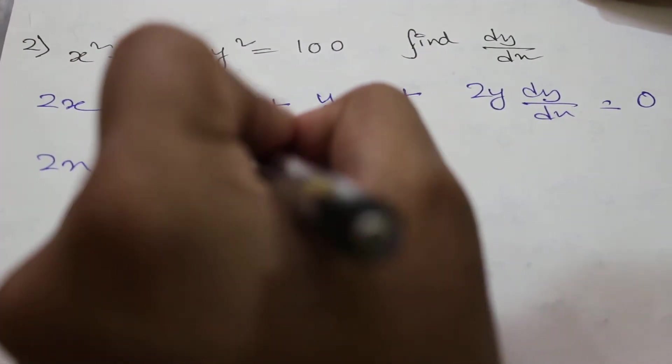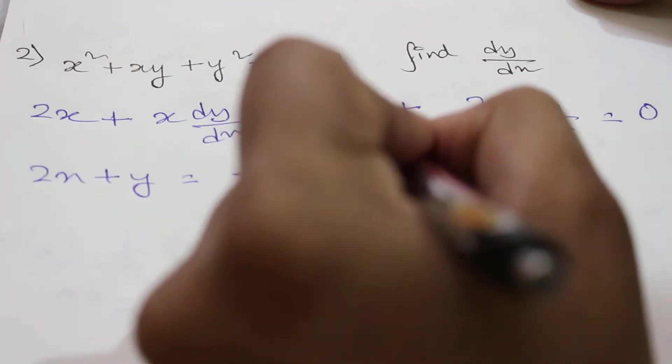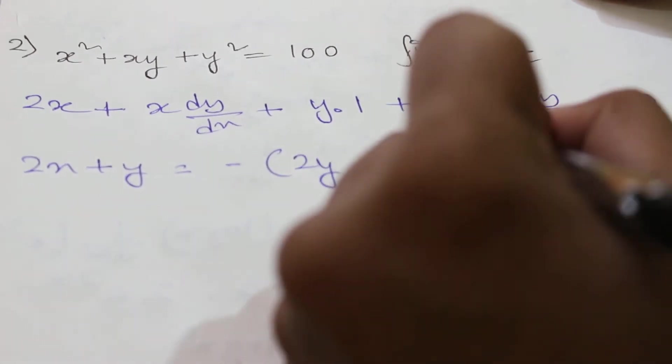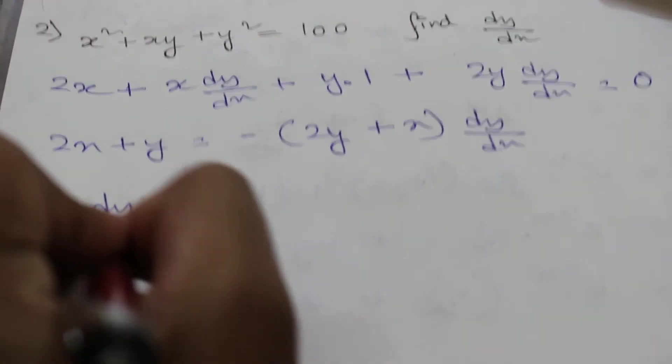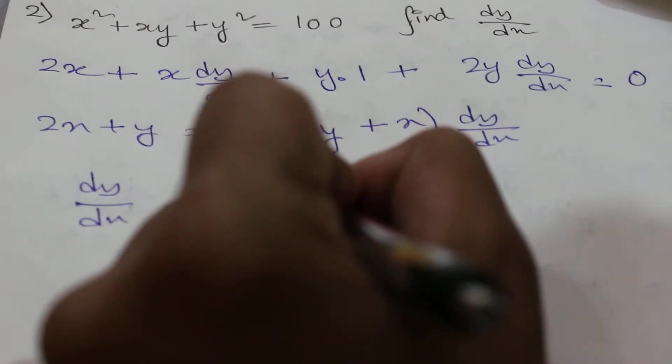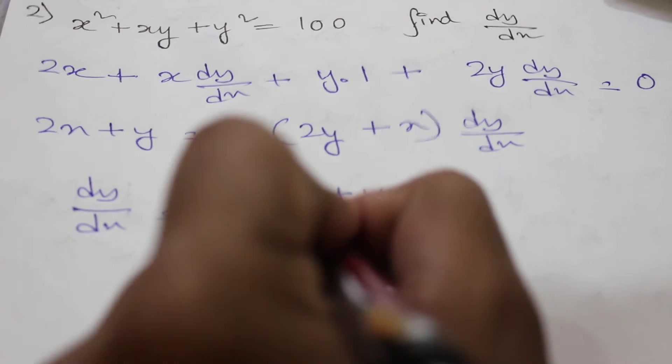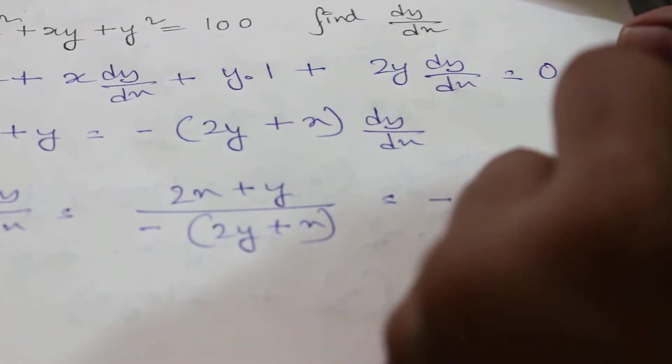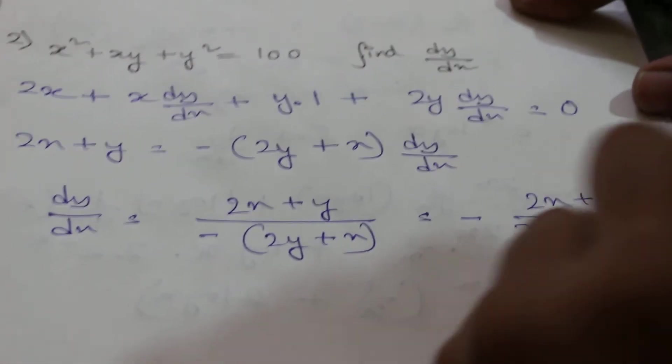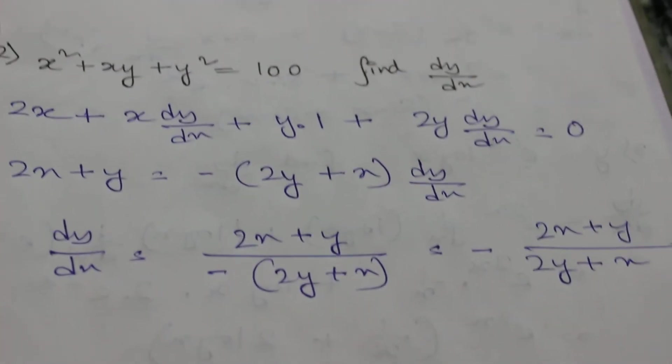We will take dy/dx term on one side. So the final answer is dy/dx = -(2x + y) / (x + 2y). This is how we can solve implicit functions.